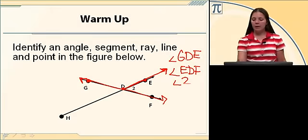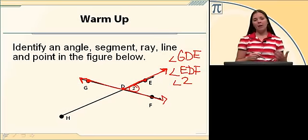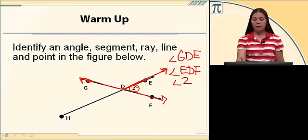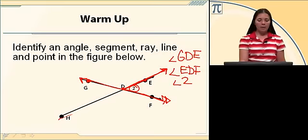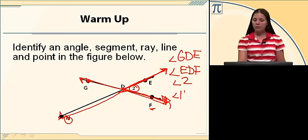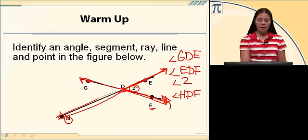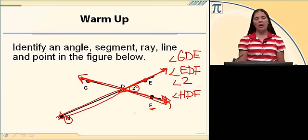We can also call it angle 2. That number tells me I can name it with the number in the middle. It tells me specifically which angle I'm talking about. When I'm talking about angle 2, the reader should also know that means angle EDF. Opening to the bottom we have angle HDF — you could name it FDH instead. Make sure D is in the middle because D is the vertex. Opening to the left we have angle GDH or angle HDG.